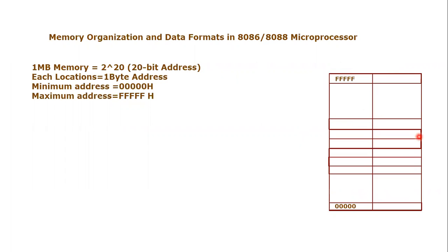Memory which is attached to the 8086 or 8088 microprocessor is basically organized in terms of bytes. Every single location holds around one byte of information. As shown in this RAM memory as a bank, you can see there are single rows inside this memory, and every single memory location can hold around one byte — that means we can store eight bits of information in every single memory location.